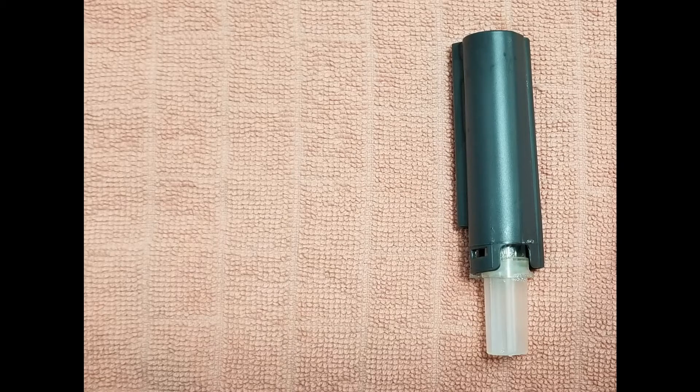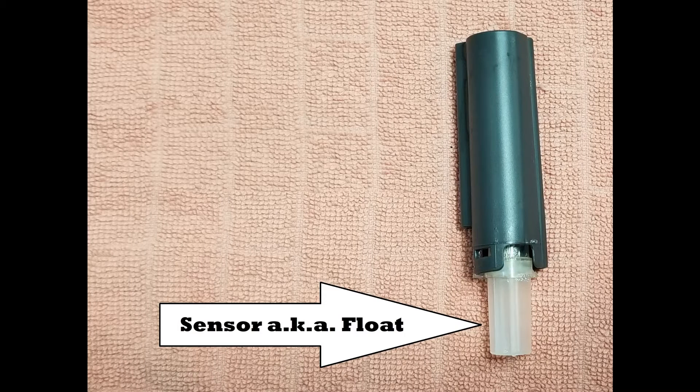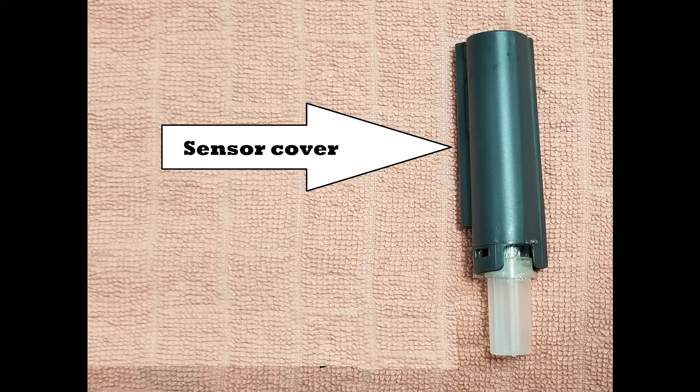Here is the water sensor. It is composed of two parts. The first part is the sensor, also known as a float because it floats on the water. The second part is the sensor cover.